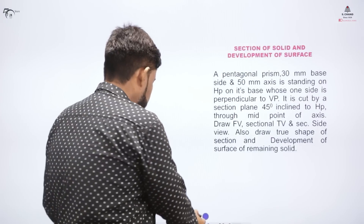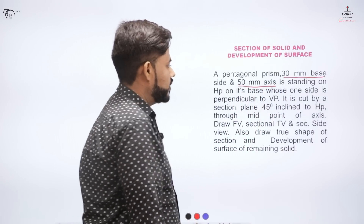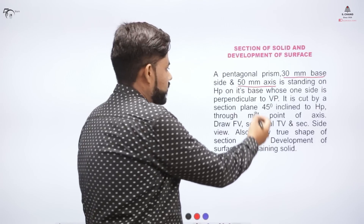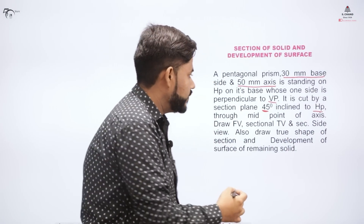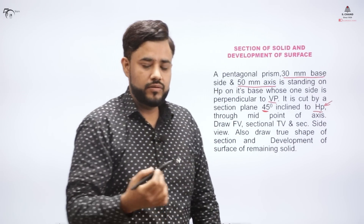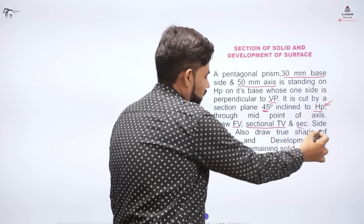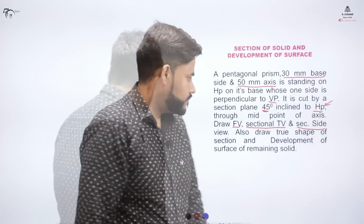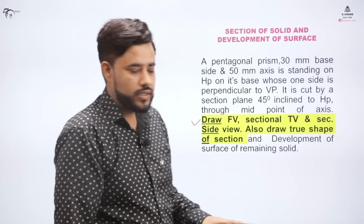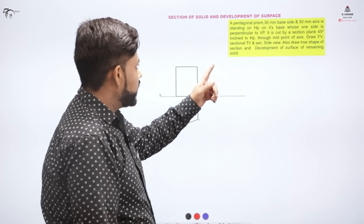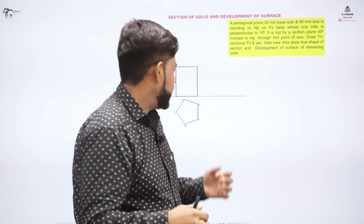Now let's consider an example from the book. A pentagonal prism with 30 mm base and 50 mm axis (height) is standing on the horizontal plane with one side of its base perpendicular to the VP. It is cut by a section plane inclined at 45 degrees to the horizontal plane. Since the inclination is with the HP, the section will appear in the front view. The question demands the front view, sectional top view, sectional side view, and the development of the remaining solid.